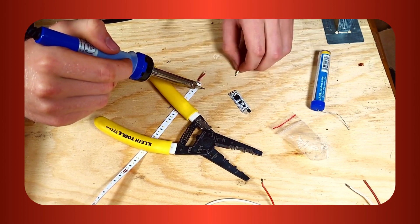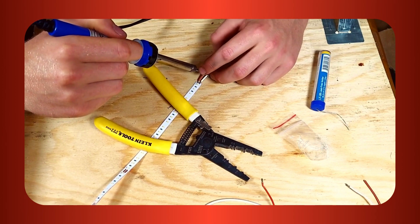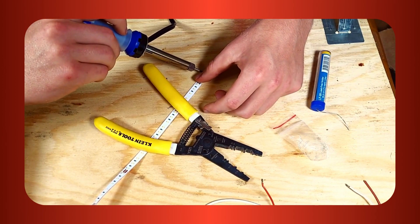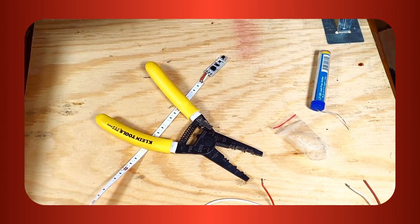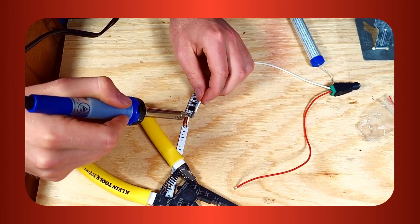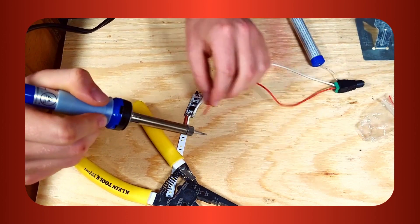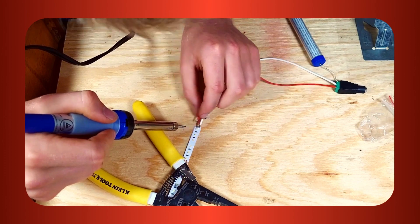After this, solder the other end of the red wire onto the sensor's positive pad, and the white wire onto the middle pad. Next, the last thing to do is wire in the power. Start by soldering the negative wire onto the negative pad on the sensor. Now, solder the positive wire onto the positive pad on the LED strip.